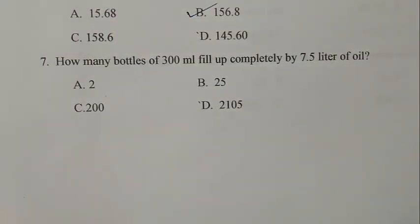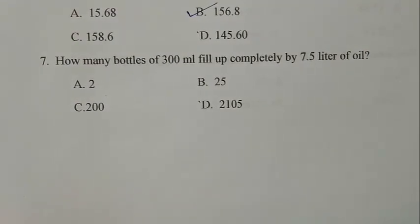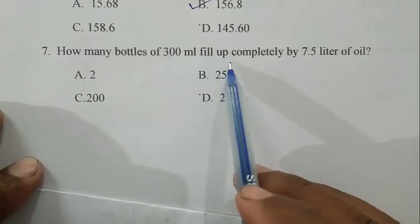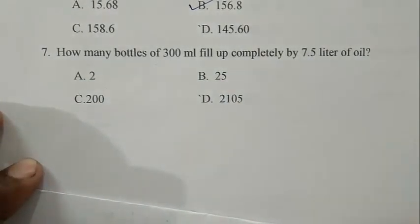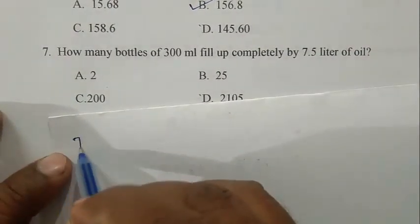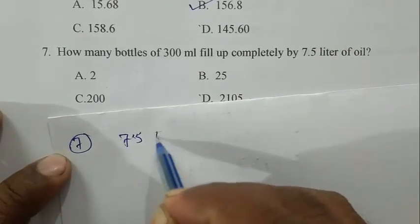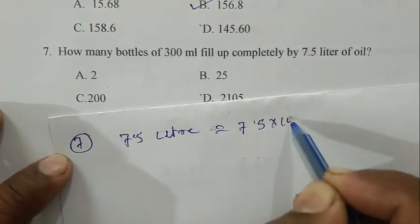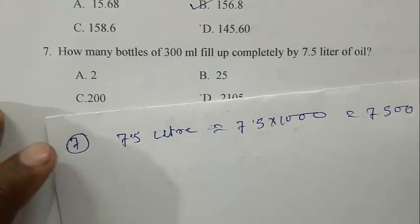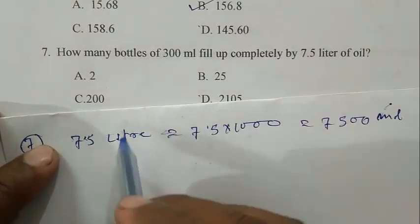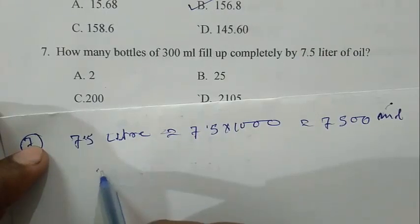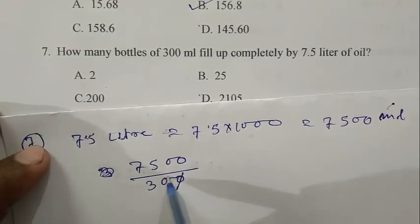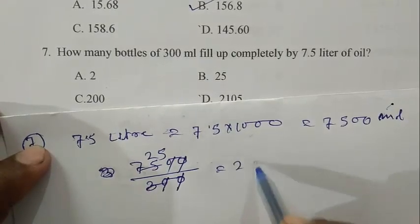Question number seven: how many bottles of 300 ml fill up completely by 7.5 liter of oil? First we convert 7.5 liter into milliliter, so it becomes 7500 ml. Capacity of one bottle is 300 ml, so we divide 7500 ml by 300 ml. It will become 25, so 25 bottles required. B is the right answer.